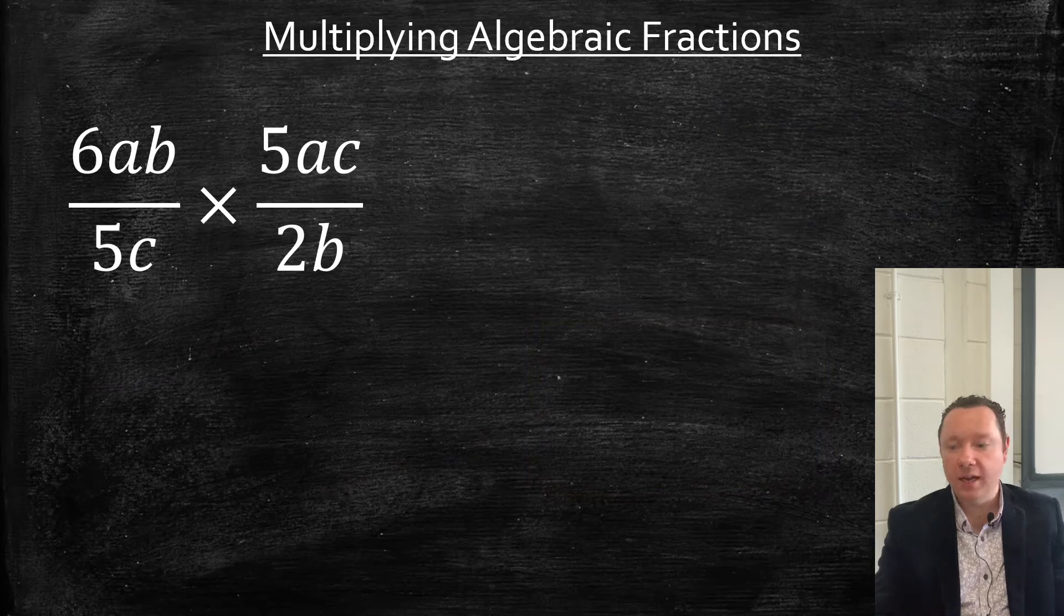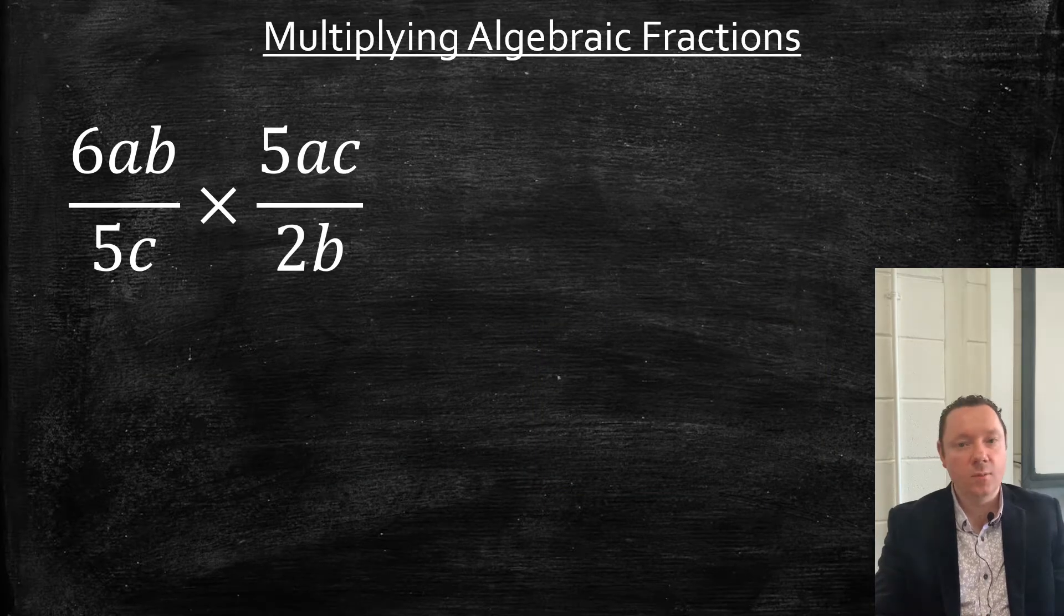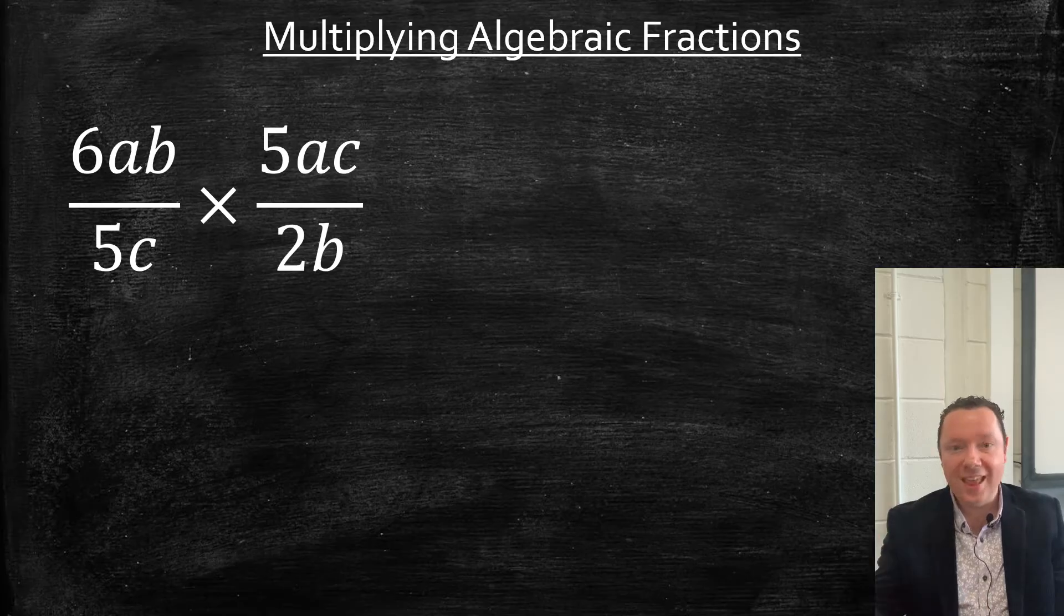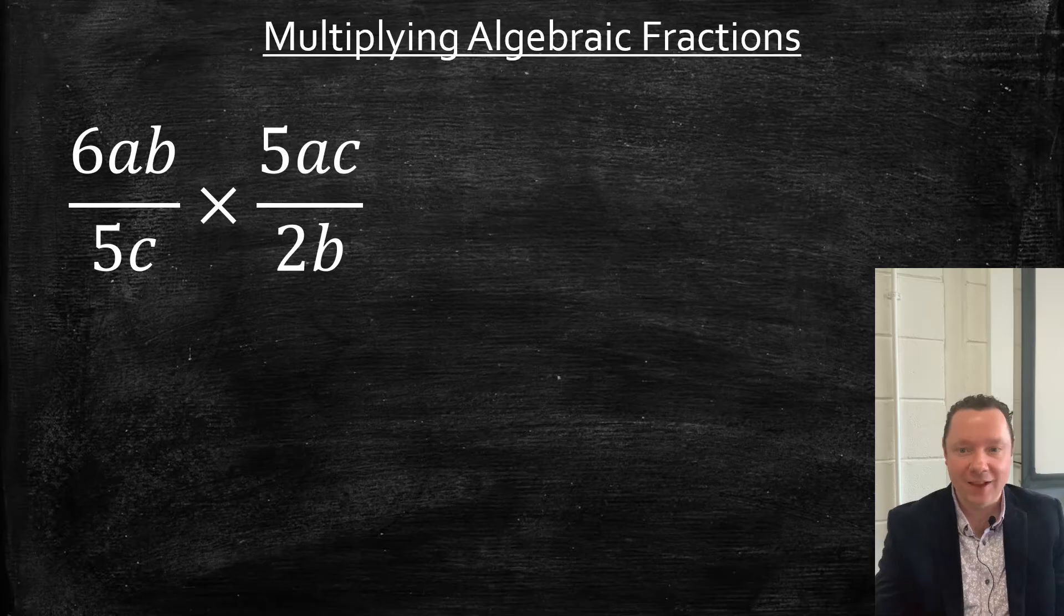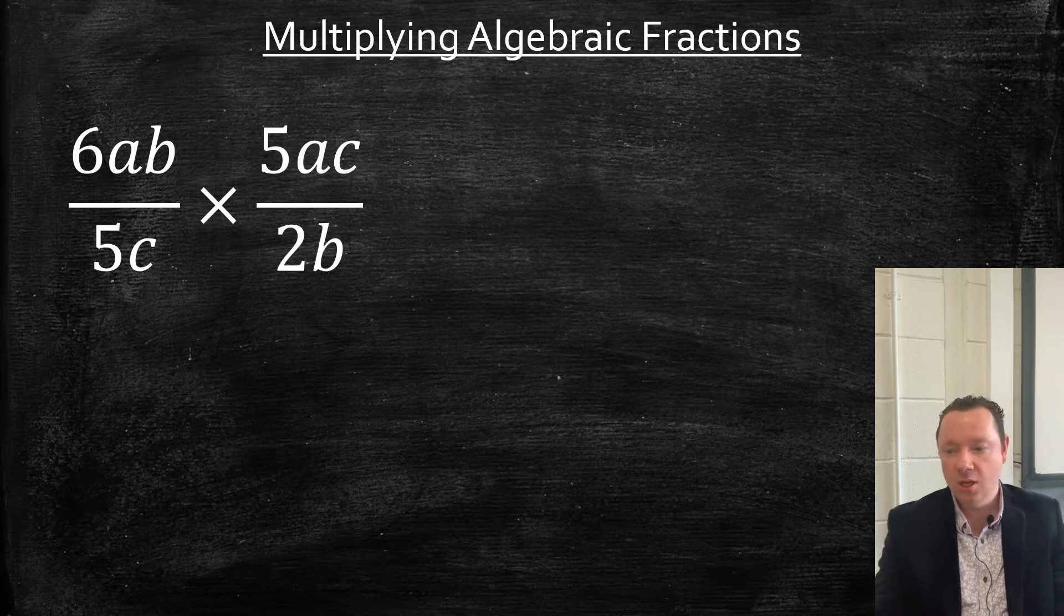Multiplying algebraic fractions. Multiplying is one of the more basic ones. Now you've got two choices. Multiply it all first, then simplify. Or as I prefer to do with multiplying, simplifying in advance. So I'm looking for things on the top and bottom that are the same, or if I can simplify by cancelling down numbers.